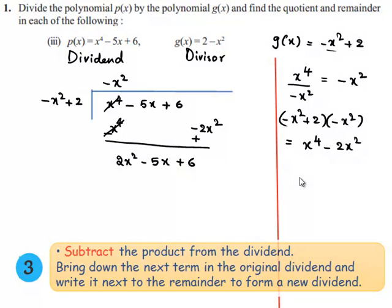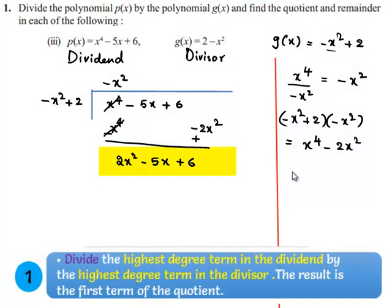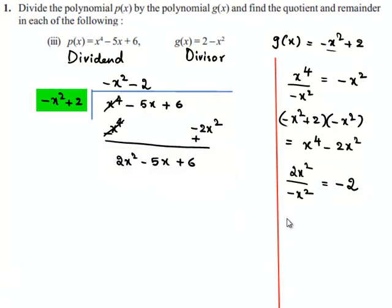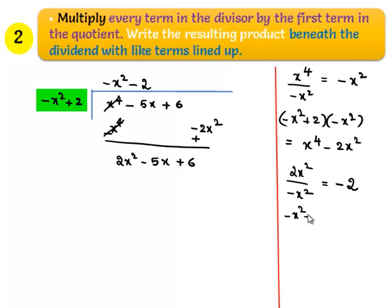This is the new dividend. The new dividend has highest degree term 2x square, and the divisor has highest degree term minus x square. On dividing them we get minus 2. So, minus 2 can be written at the place of the quotient. The divisor, minus x square plus 2, multiplied by minus 2, gives 2x square minus 4, which can be written here.